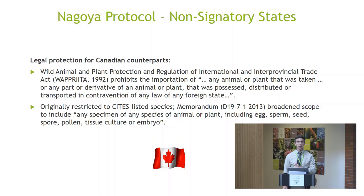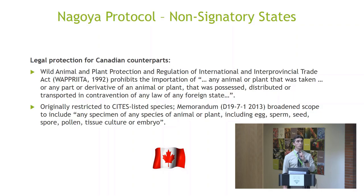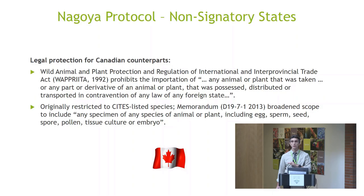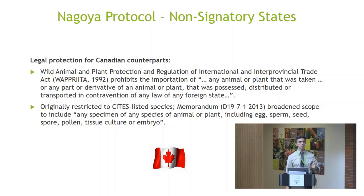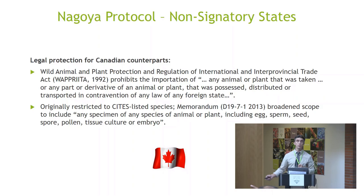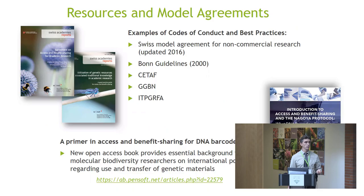One take-home message is that although there are non-signatory countries, it does not necessarily mean the laws do not apply to them. For example, if you are a Nagoya signatory and you send us biological samples, we are legally obliged by the government of Canada to comply with any legislation your country has. Canada has the WAPPRIITA Act of 1992, which precedes the CBD by one year, and explicitly states that nothing can be shipped into Canada in contravention of any law of the state from which it originates. That was originally designed for CITES but has been extended to other organisms.